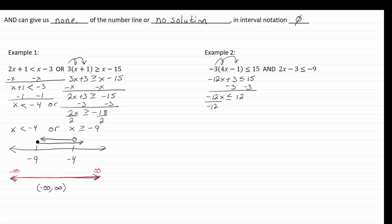We'll divide by negative twelve, and x is going to be less than or equal to negative one. I'll bring down my AND, solve the other equation. We're going to get two x is less than or equal to negative six. Divide by two, and we get that x is less than or equal to negative three.